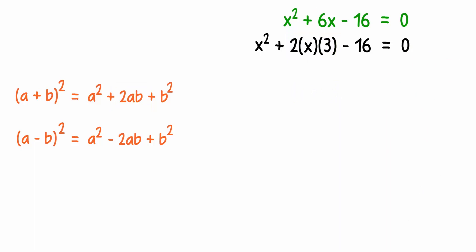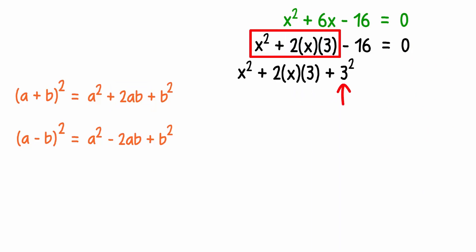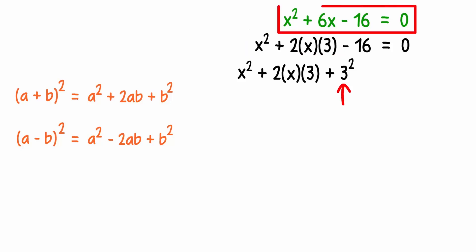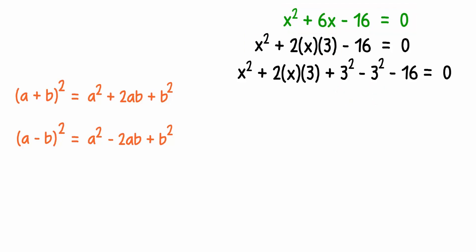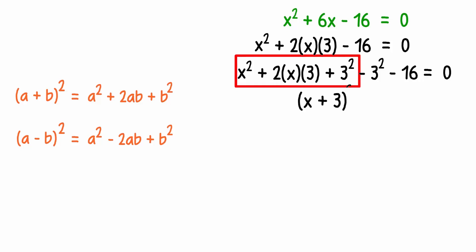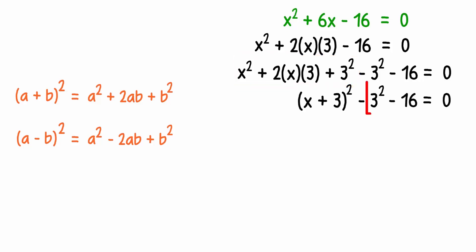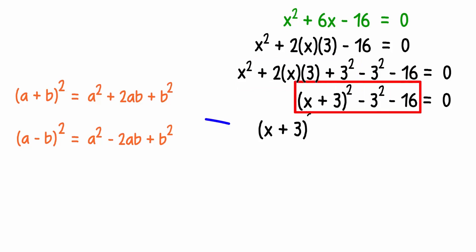It's 3. So to form a perfect square, we can add 3² to this. But we can't just change the equation — to keep the original equation balanced, we subtract 3² as well. Now if we look at the first three terms, we get a perfect square. It can be written as (x + 3)². And as 3² is 9, we can simplify this to get the resulting equation.